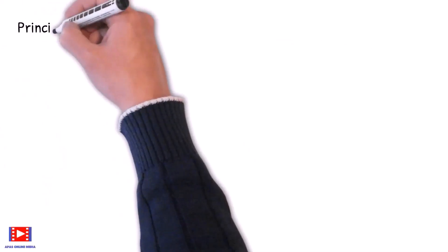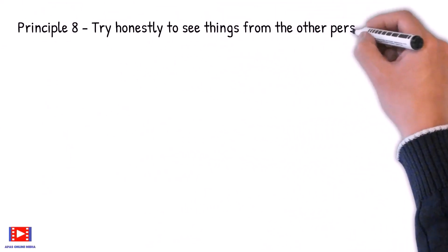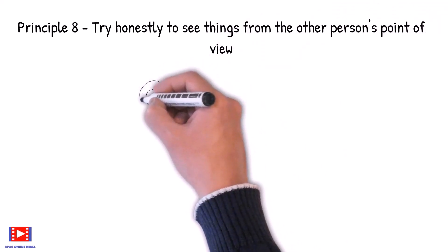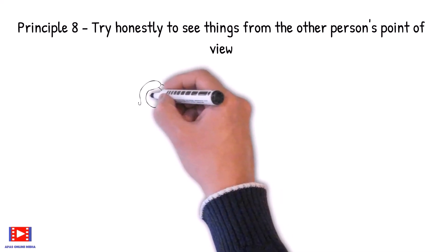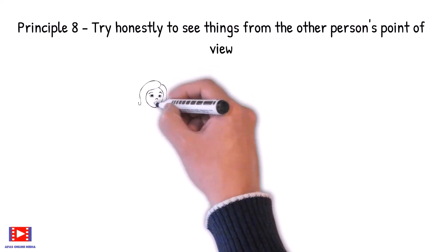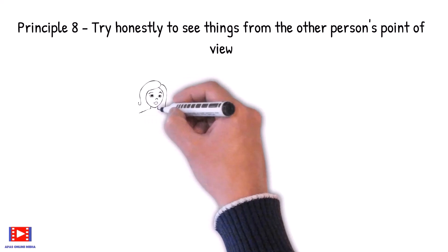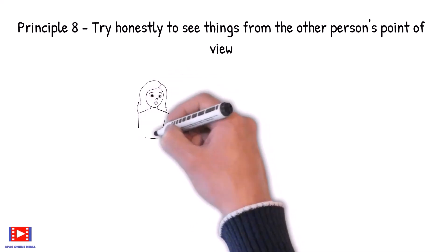Principle 8: Try honestly to see things from the other person's point of view. Remember that other people may be totally wrong, but they don't think so. Don't condemn them. Any fool can do that. Try to understand them.